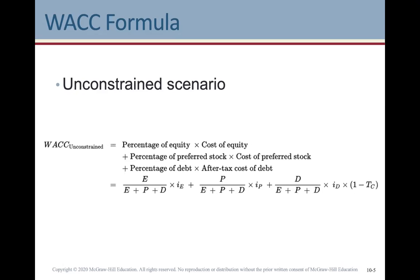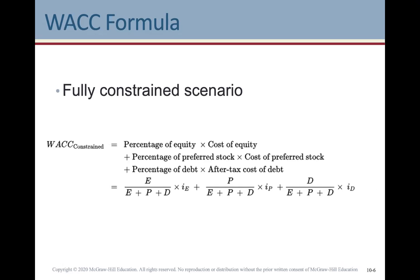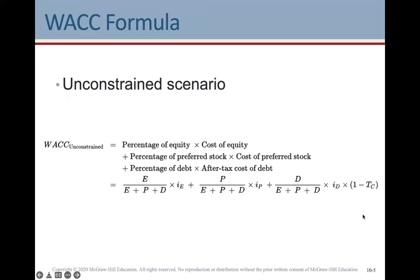We'll be going over examples throughout this lecture. For the fully constrained scenario, the formula is the same — the only thing that changes is the last term for debt, where there's no tax deduction. That (1 minus the corporate tax rate) term takes into account the deduction you get to use for debt interest, and in the fully constrained case it simply doesn't apply.